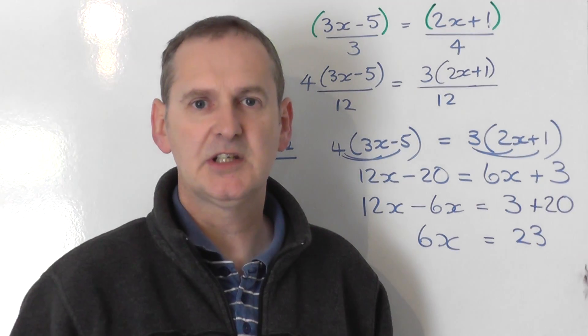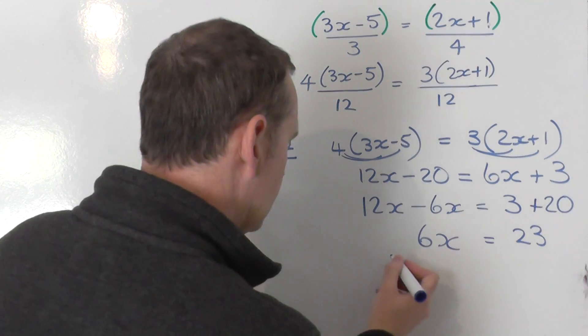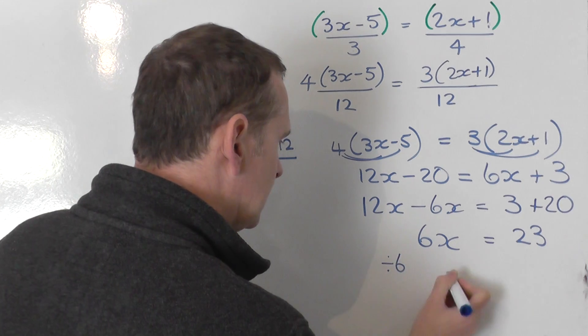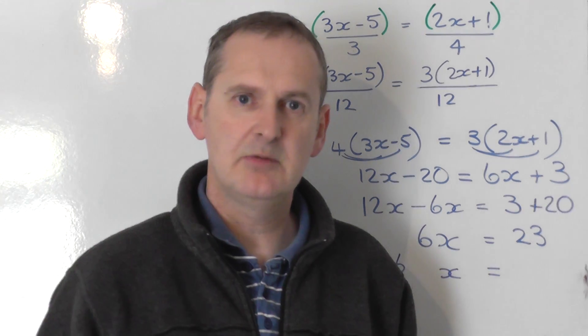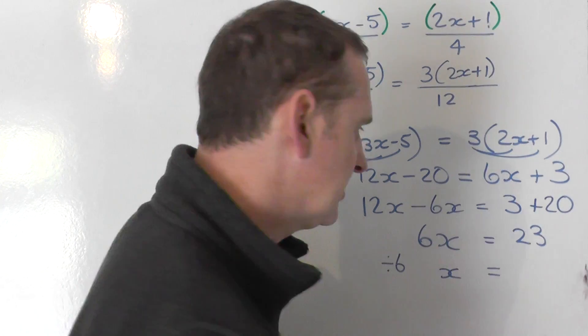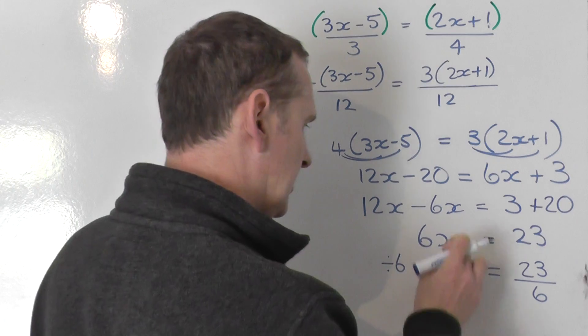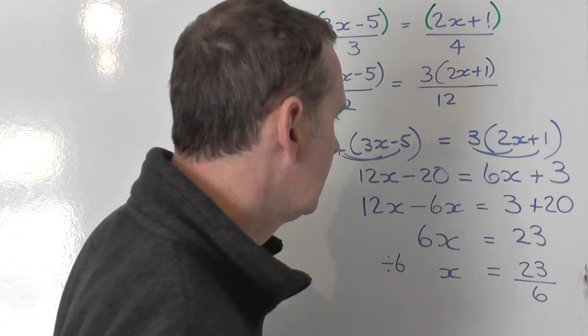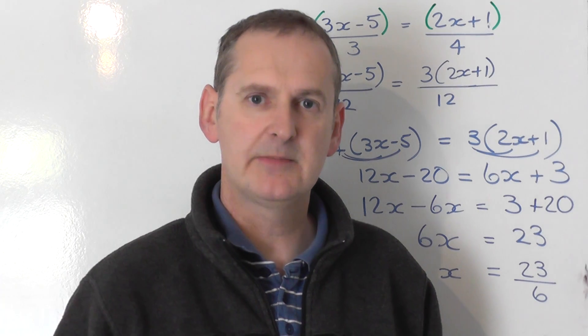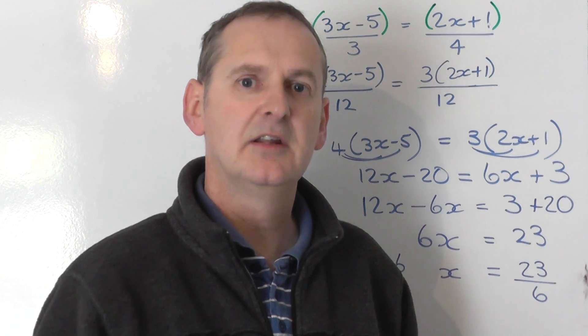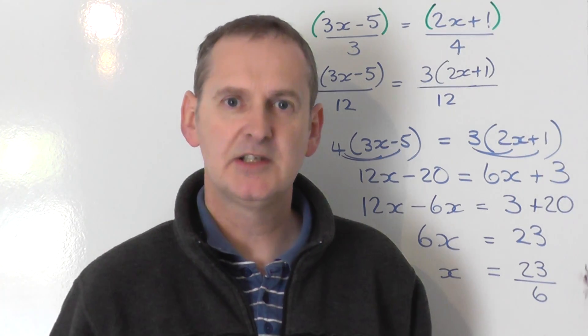So on the left I've got 6x's, but I don't want 6x, I want 1x. So to go from 6x to 1x, I divide by 6. So to keep the balance the same, I divide the other side by 6 as well. So I take the 23 and I divide that by 6. 23 divided by 6 is not a nice whole number. I'm not going to put a decimal answer. The answer is the fraction which doesn't cancel, 23 sixths. That's the answer to this question.